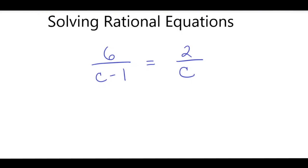Here I have 6 over C minus 1 equals 2 over C. Notice I have a variable on both fractions, so you can start on either one. I'm going to start with 6 times C. So I have 6C equals 2 times C minus 1.